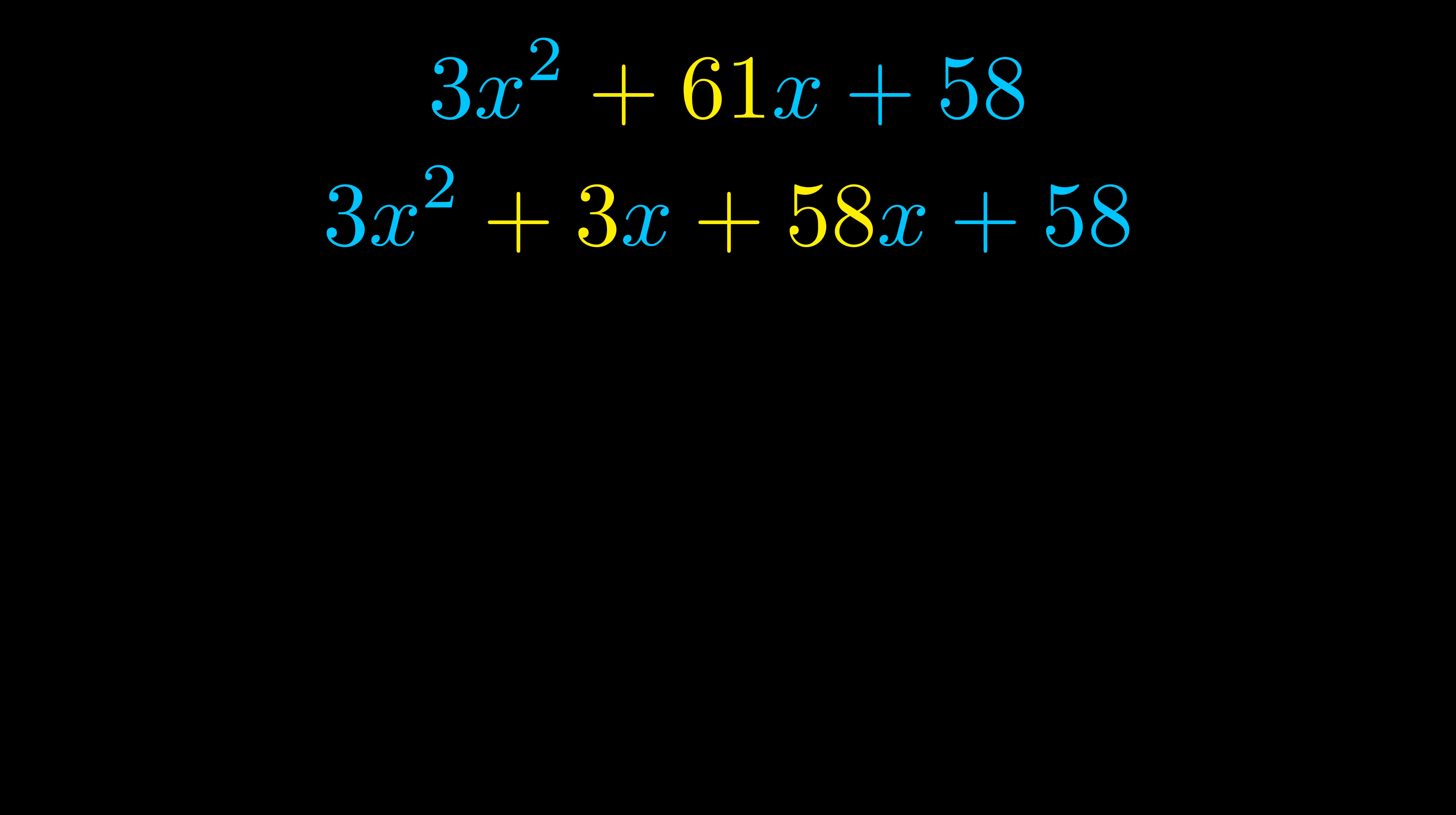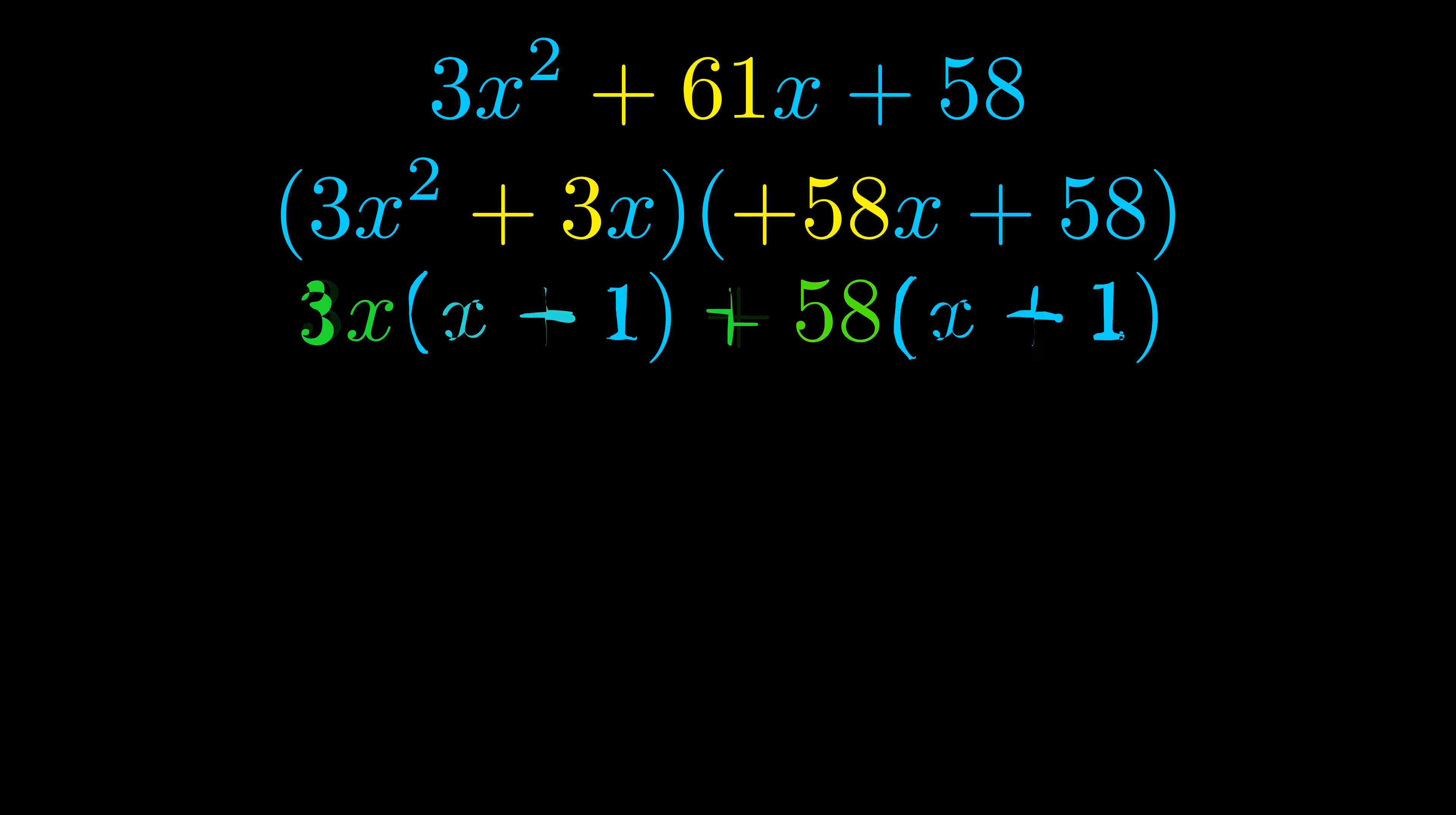Once we've done this we go ahead and we put parentheses around the first term and the last term and we do that so that we can take the greatest common factor out of both terms. We can see the greatest common factor is now outside in green. Notice also how what remains inside of the parentheses is the same in both cases. The blue values are the same.